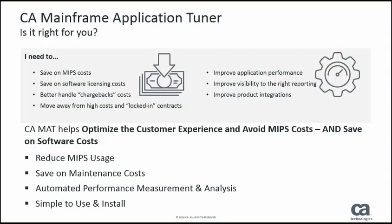CA Mainframe is going to help the customer to improve their overall customer experience. It helps them to avoid MIPS costs and to save on software costs. We're going to do this by helping you to identify which applications are consuming the most runtime and consuming MIPS. This is going to allow you to save on overall maintenance costs. We have the capability to automate this performance and measurement analysis within MAT, and MAT is also very simple to use and to install.